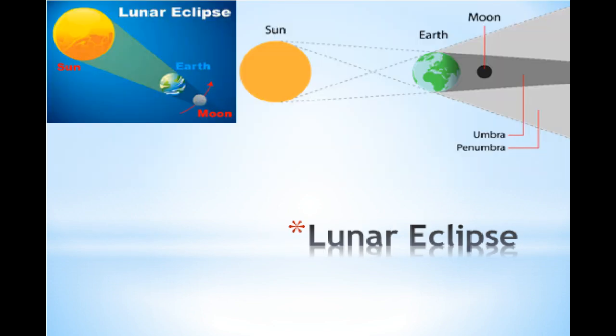A lunar eclipse occurs when the moon enters the shadow of the earth while revolving around it. At this time, it is necessary that the earth is in between the sun and the moon and all three of them are in the same plane. On a full moon day, the moon's path of revolution passes through the thick shadow of the earth. If the moon is totally hidden within the shadow of the earth, we see a total lunar eclipse. And if only a part of the moon is in shadow, we see a partial lunar eclipse.